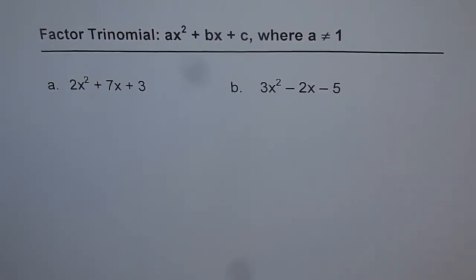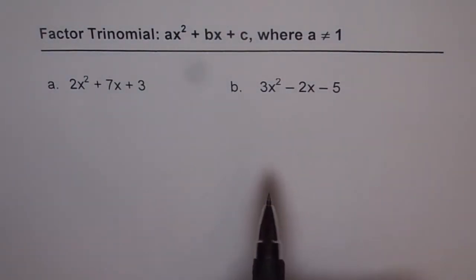Let us understand how to factor trinomials like ax² + bx + c where a is not equal to 1. That means the leading coefficient is not 1. So we have two examples here.